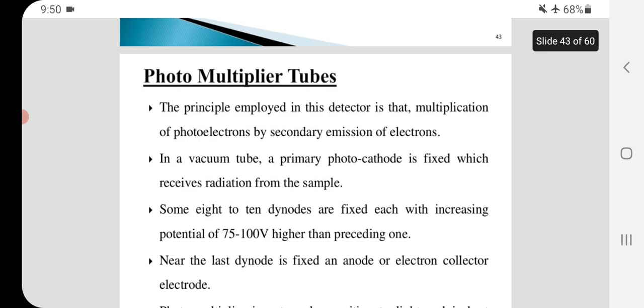Photomultiplier tubes: The principle employed in this detector is that multiplication of photoelectrons by secondary emission of electrons. In a vacuum tube, a primary photocathode is fixed which receives radiation from the sample.